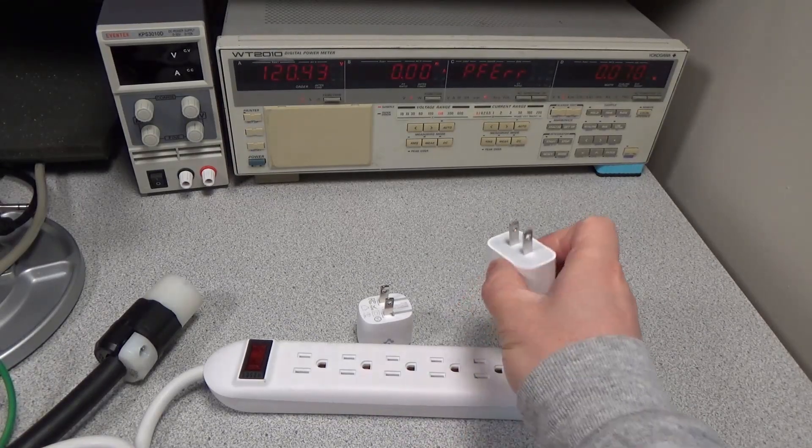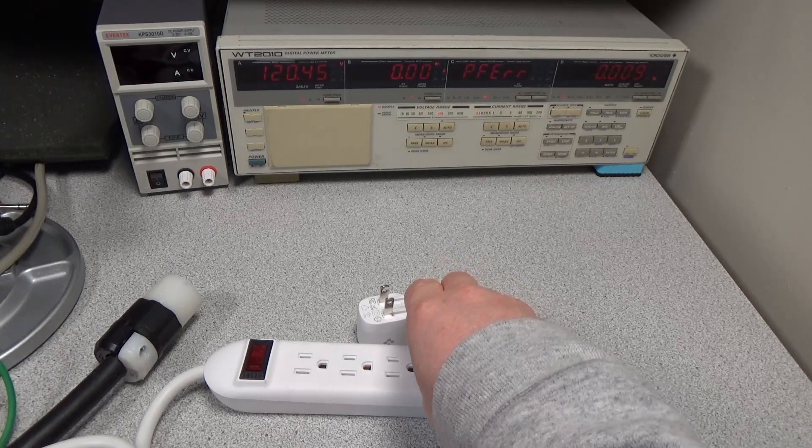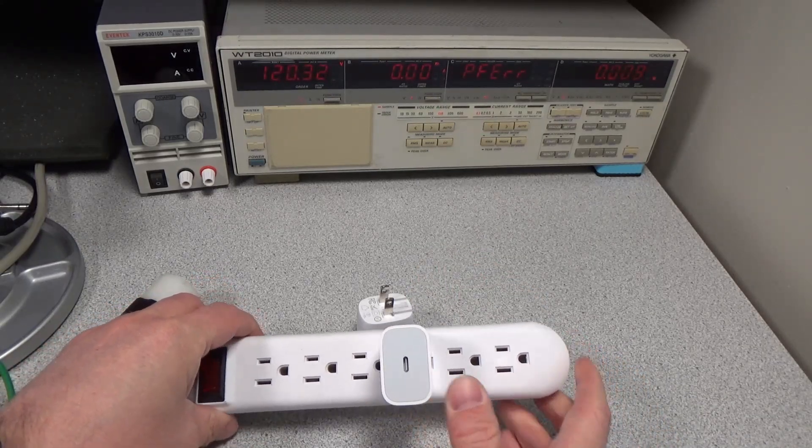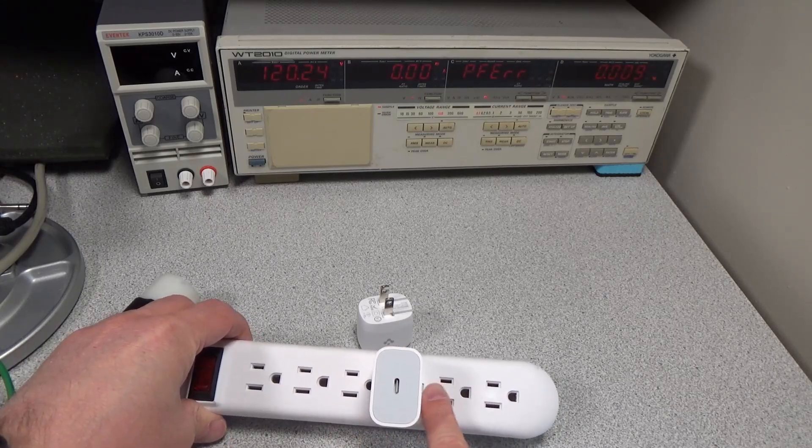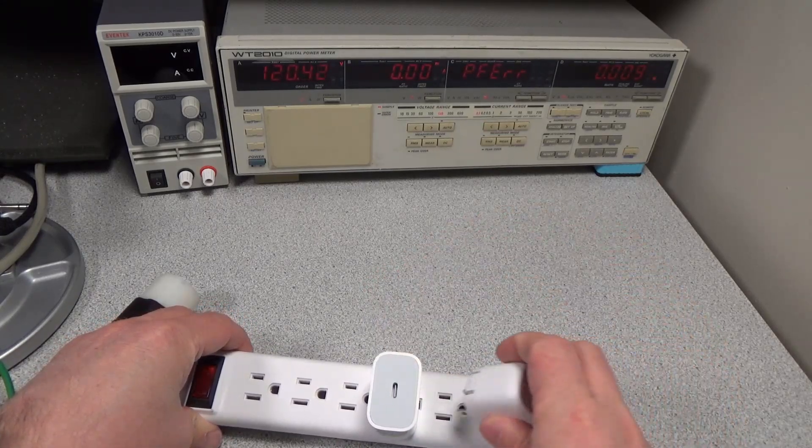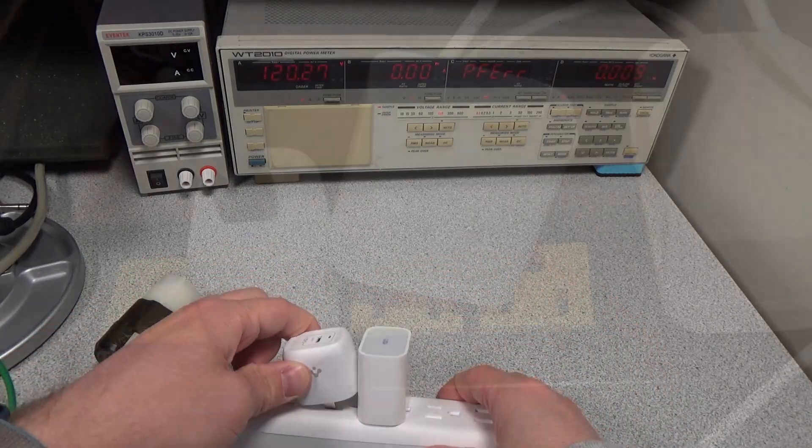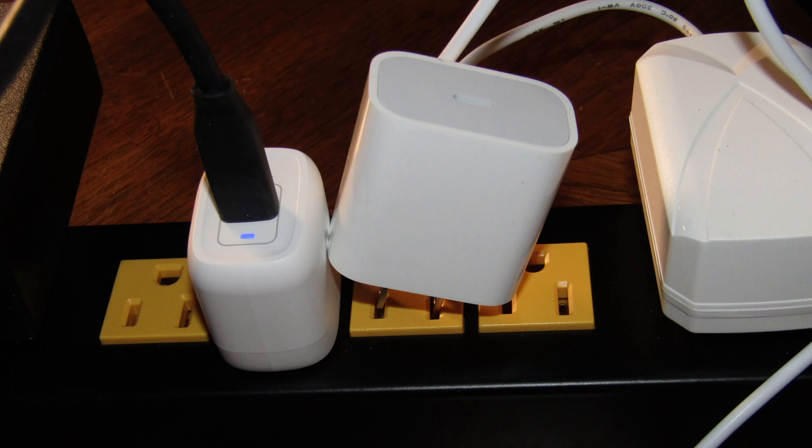The next thing to note is, depending on what kind of power strip or wall plug you're using, you may or may not be able to fit more than one of these adapters next to each other. In a typical vertically laid out power strip, the Spigen blocks the adjacent plugs. In a horizontally laid out power strip, the Apple blocks the adjacent plugs. So neither is really a win in this case, but they are just different.